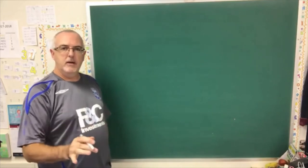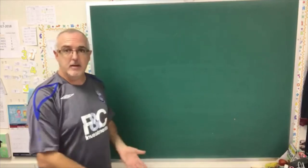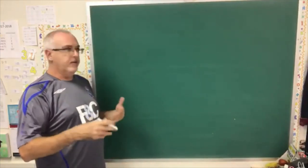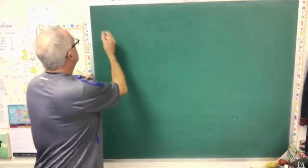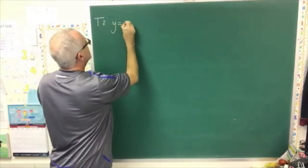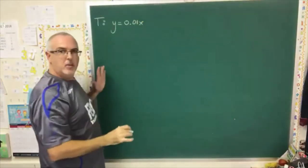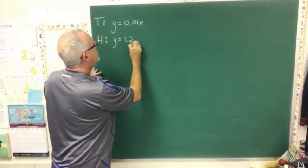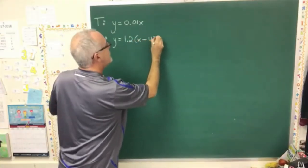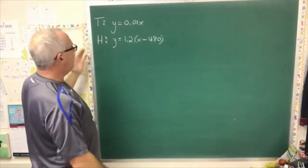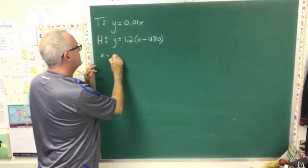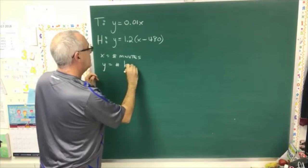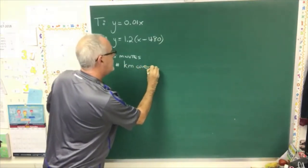Now I'm going to try to draw the graph of the tortoise and the hare, putting them together on the same graph. To do that, you have to create the equations differently so that both coordinates — x and y — are defined the same way for both animals. The equation for the tortoise ends up being y equals 0.01x. But the equation for the hare is y equals 1.2x minus 480. We define x as the number of minutes and y equals the number of kilometers covered.